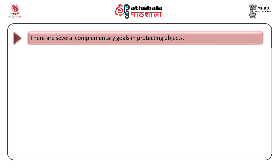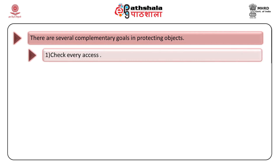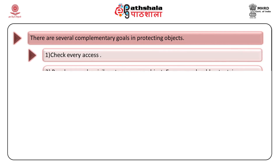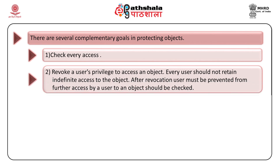Which are the complementary goals in protecting objects? The first is to check every access. There are chances that we want to revoke a user's privileges to access objects. For that we need to check who is authorized to use the objects. We don't want a user to have indefinite access. We want a user to stop invoking objects after we revoke their authorization, so every access by a user to an object needs to be checked.